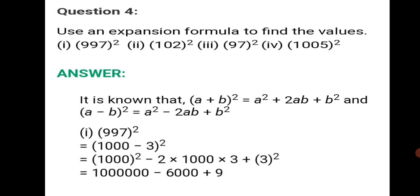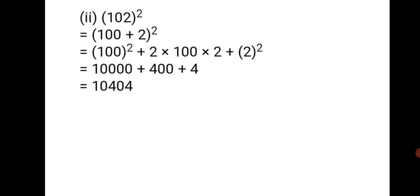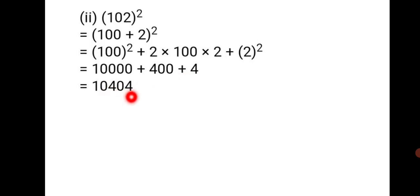Second sum: 102². We write 102 as 100 + 2, then apply (a+b)²: 100² + 2×100×2 + 2² = 10,000 + 400 + 4 = 10,404.